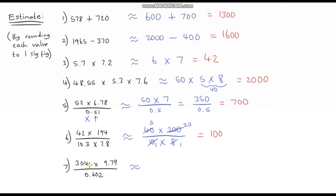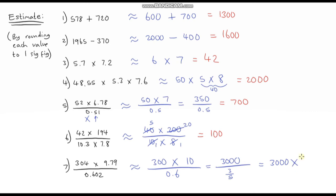The last one: approximately equal to this rounded down to 300, multiplied by this rounded up to 10, divided by 0.6 — and again this is not rounded up to 1, it rounds down to 0.6. So 300 multiplied by 10 is 3,000. Dividing by 0.6, which is the same as 3 fifths: dividing by a fraction is the same as multiplying by the reciprocal. So this is 3,000 multiplied by 5 over 3. 3,000 divided by 3 is 1,000, multiplied by 5 is 5,000.